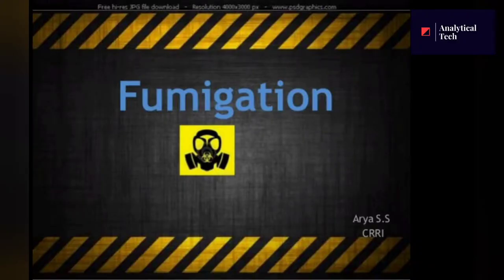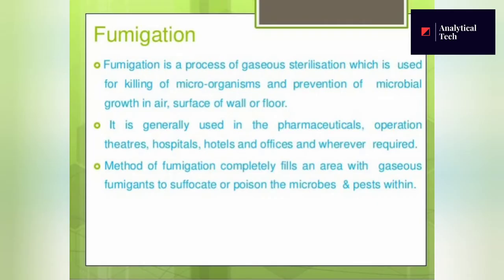Welcome to another video. Today we will talk about fumigation using a fogger machine. Fumigation is the process of gaseous sterilization which is used for killing microorganisms and preventing microbial growth in the air, on surfaces of walls, or on floors. The main aim of the fumigation process is to eliminate microorganisms.